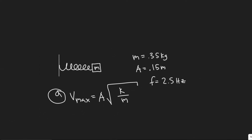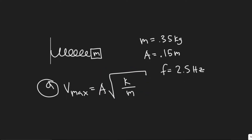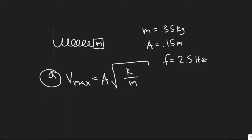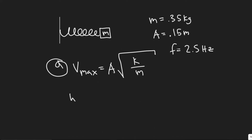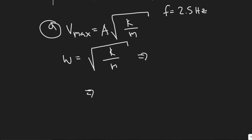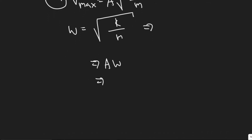For part A, they want the velocity when it passes the equilibrium point — that's essentially the max velocity. The formula is v_max equals the amplitude multiplied by the square root of k over m. Since angular frequency omega equals the square root of k over m, the max velocity is A times omega. And since omega equals 2 pi f, we get v_max equals A times 2 pi f.